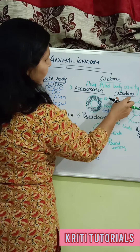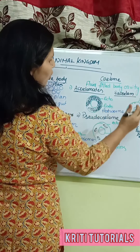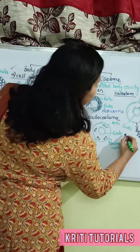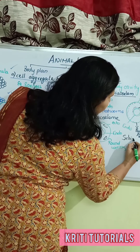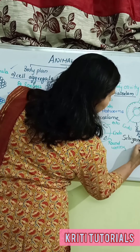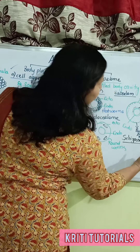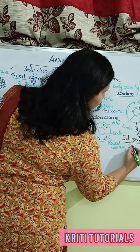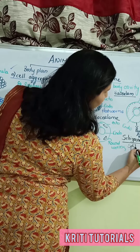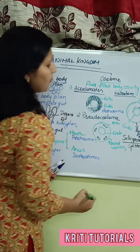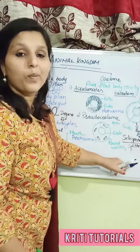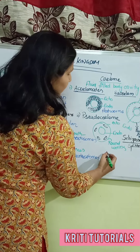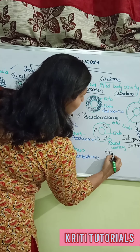We can also categorize eucoelomates into two types. The first one is called schizocoelome, where the mesodermal layer is split into halves. The next one is enterocoelome.